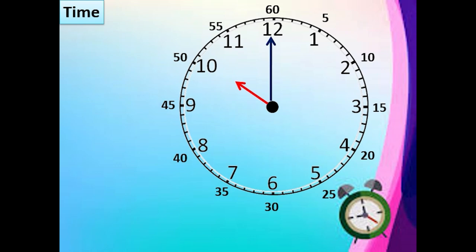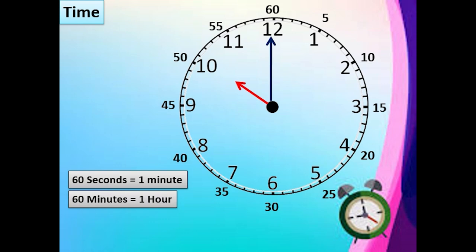So children, this is a table of 5 also. 5 1's are 5, 5 2's are 10, 5 3's are 15, 5 4's are 20, 5 5's are 25, 5 6's are 30, 5 7's are 35, 5 8's are 40, 5 9's are 45, 5 10's are 50, 5 11's are 55 and 5 12's are 60. 60 seconds is equal to 1 minute. 60 minutes is equal to 1 hour and 24 hours is equal to 1 day.